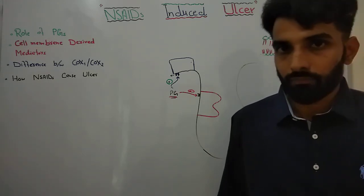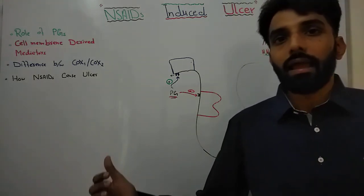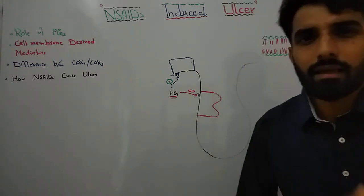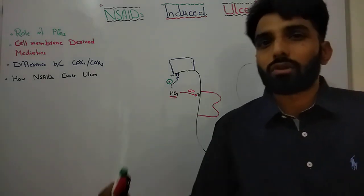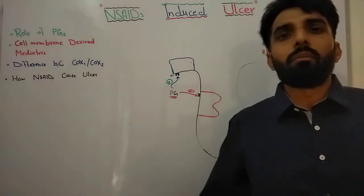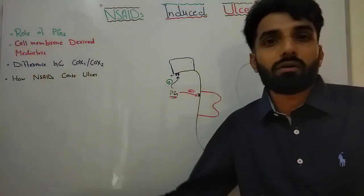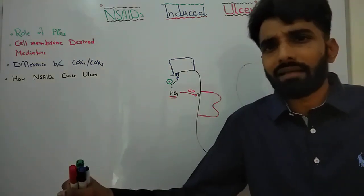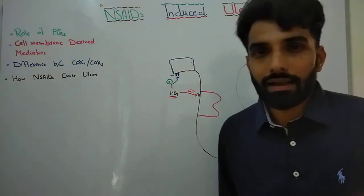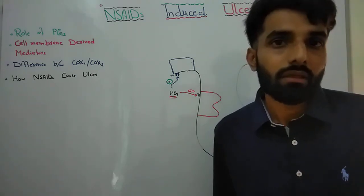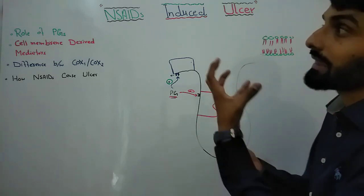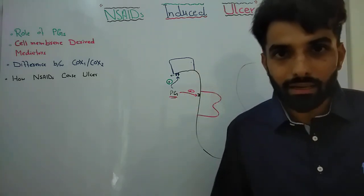Before understanding the pathophysiology, let me first explain what prostaglandins are, how they are formed, and what their role is. Then we will talk about different types of enzymes, and then we will talk about the role of NSAIDs. Prostaglandins are basically membrane-derived mediators and they are formed throughout the body — in the GI mucosa, in the renal tubules, in inflammatory cells, in macrophages, in platelets, and in every cell they have different roles.